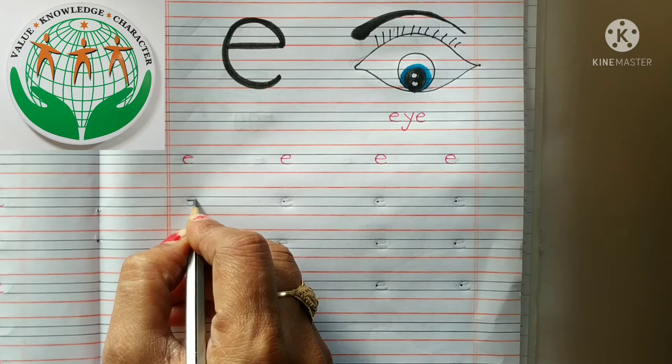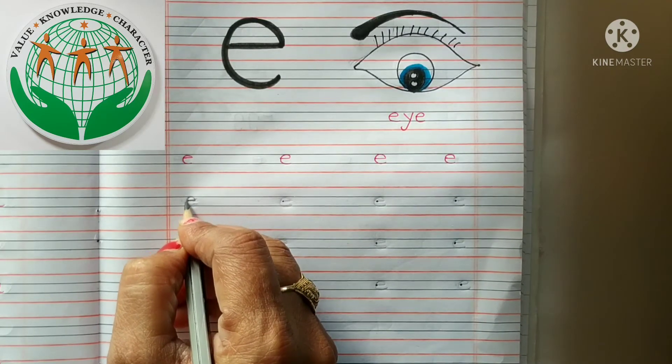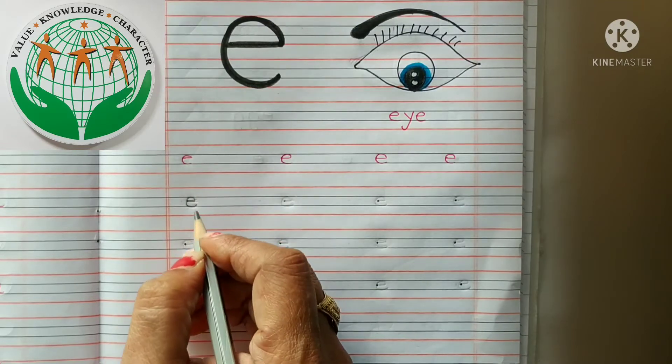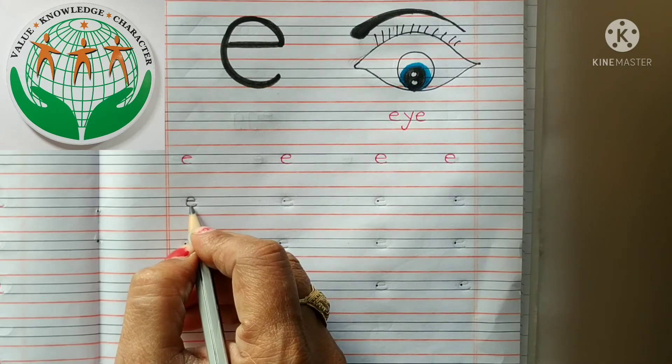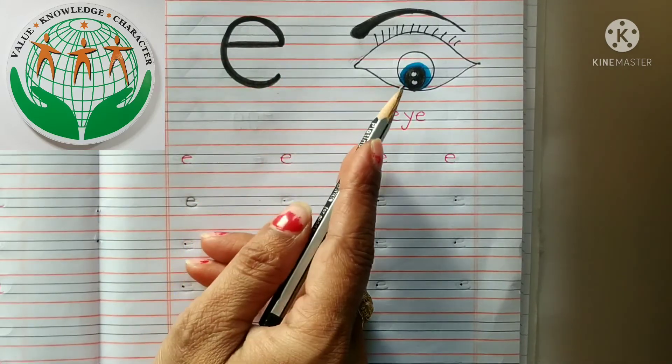And we will draw a small sleeping line. Now we will make a curve like small c. Phir haam small c ki jaysa a curve banayenge. This is small e. E for eye.